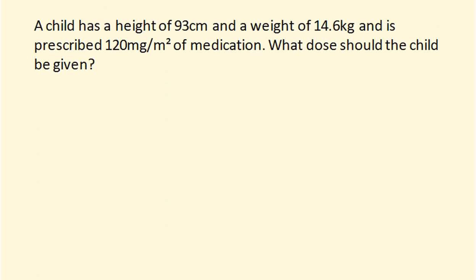Here's the first question: a child has a height of 93 centimetres and a weight of 14.6 kilograms, and is prescribed 120 milligrams per metre squared of medication. What dose should the child be given? The first thing we're going to do is use the height and weight to work out the child's body surface area in metres squared, and then use that to work out how much medication the child needs.